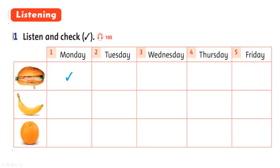I can see a sandwich, bananas, and an orange, right? I can see Monday, Tuesday, Wednesday, Thursday, and Friday. For example, number 1 — it's Sunday, I have a sandwich, you check here. I don't have a banana and an orange, you don't check here. Remember: if yes, you check here; if no, you don't check here.